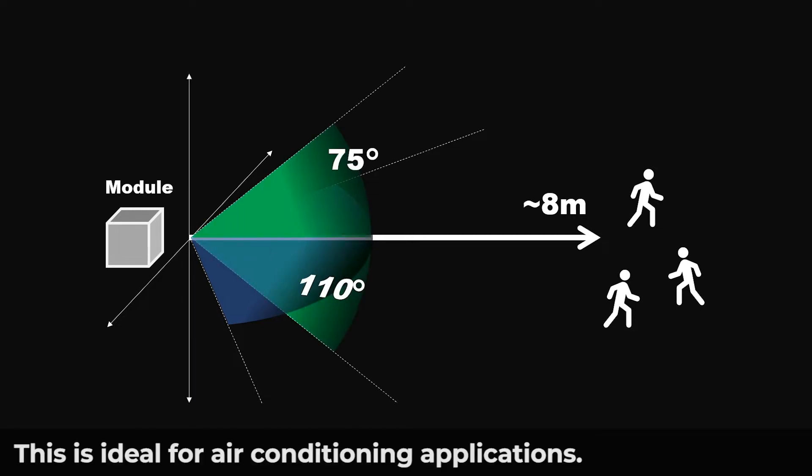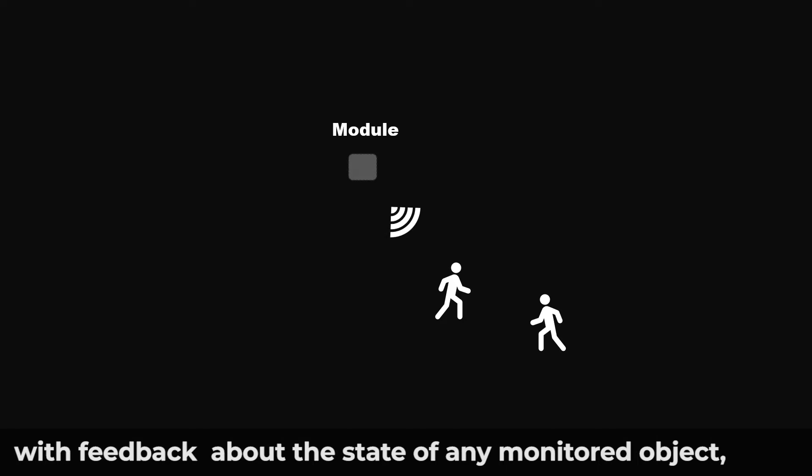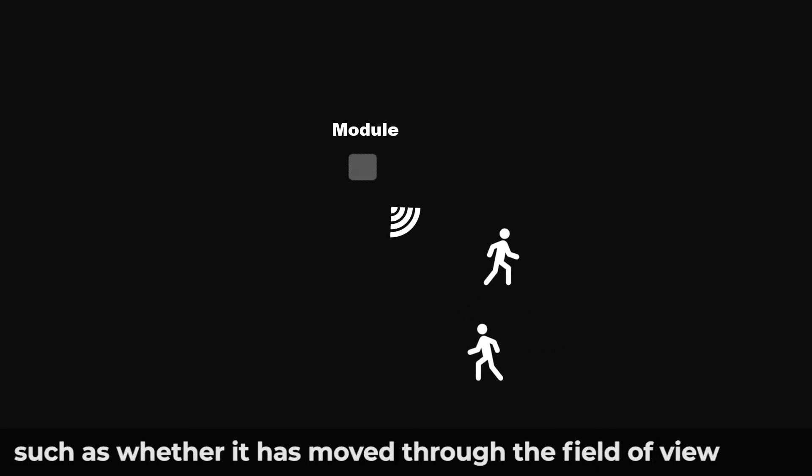This is ideal for air conditioning applications. The radar provides the air conditioner's control system with feedback about the state of any monitored object, such as whether it has moved through the field of view or has become stationary.